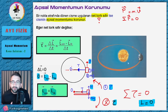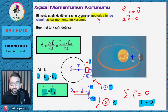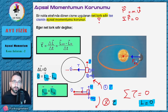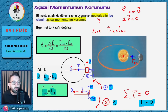Güneş etrafında dönen Dünyamızı düşünelim. Güneşin Dünya'ya uyguladığı kütle çekim kuvveti var; başka kuvvet yok. Kütle çekim kuvvetinin uzantısı dönme noktasının merkezinden geçtiği için herhangi bir torku yoktur. Dolayısıyla Dünya güneş etrafında dönerken açsal momentumu korunur: delta L = 0, yani ilk momentum her zaman son momentuma eşit. Burada bir kuvvet var ama kuvvetin torku yok — o zaman sorun yok, açsal momentum korunur.